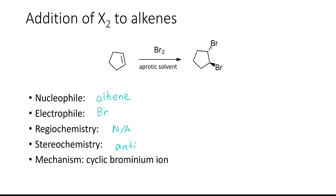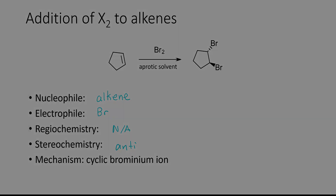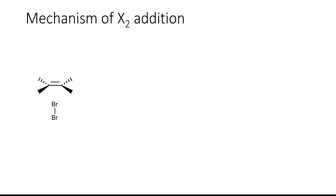Now let's take a look at the mechanism of this reaction to understand why the bromines add anti across the alkene. The reaction starts when the bromine molecule approaches the alkene. The rich electron density of the alkene polarizes the bromine molecule such that the bromine closest to the alkene gets a partial positive charge and the bromine further away gets a partial negative charge. So the electrons from the alkene grab the bromine that is closest to the alkene, and simultaneously one of the lone pairs on that bromine attacks one of the carbons that belongs to the alkene. The bond between the two bromine atoms breaks and one of the bromines takes the electrons from the bond and leaves.